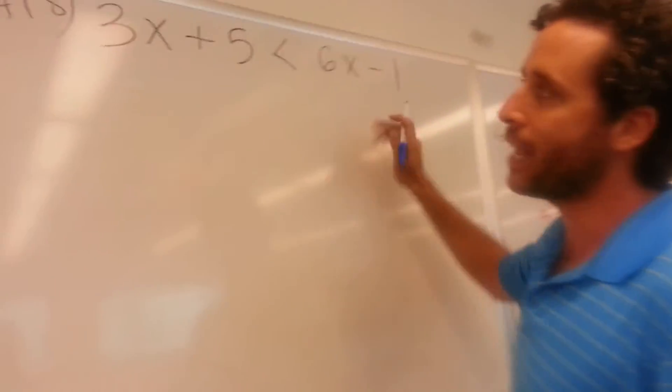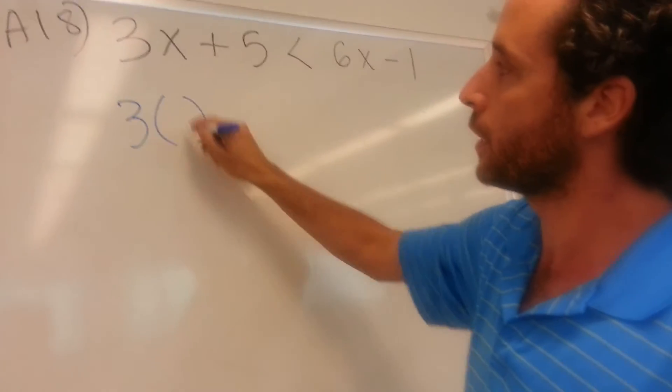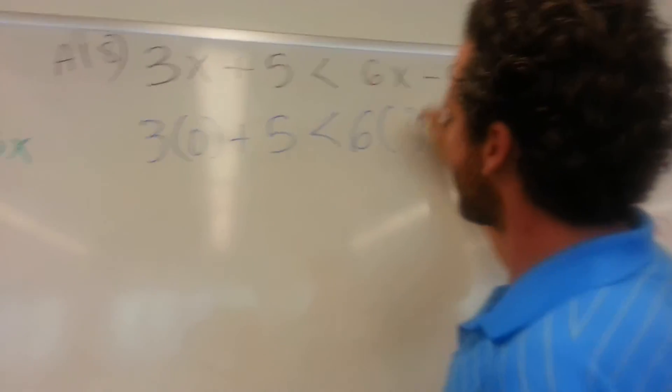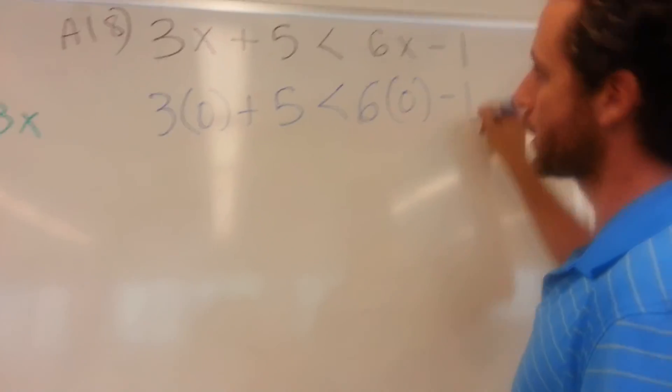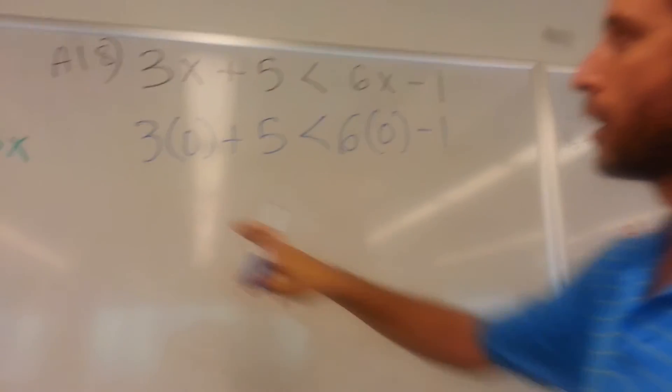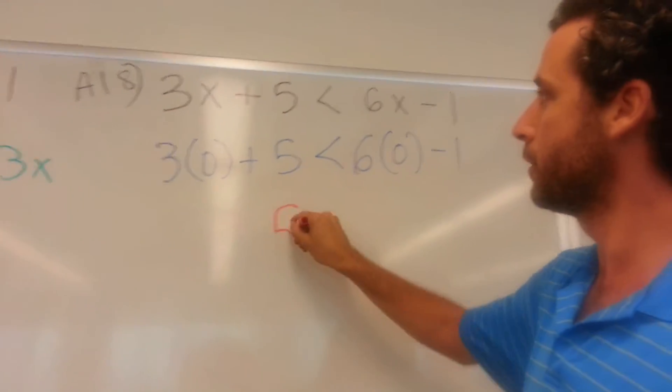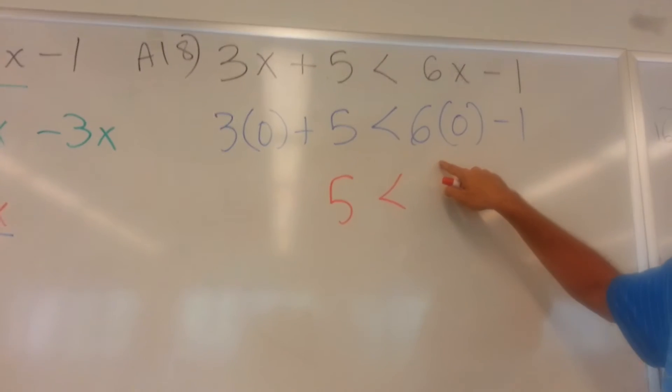Here we have the same problem again. Let's substitute zero in here. Whenever I see an x, I'll put an open and close parentheses, and I'll plug in a zero there. And I'll show you why in a minute. Three times zero is zero. So here we're just going to be like five is less than. Six times zero is zero, negative one.